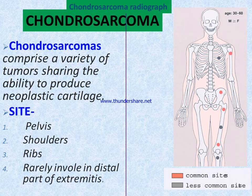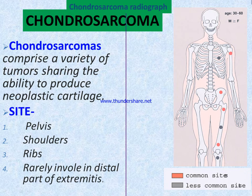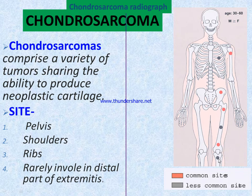Chondroma comprises a variety of tumors sharing the ability to produce neoplastic cartilage. The site of osteochondroma is the pelvis, shoulder, and ribs; the distal part of extremities is rarely involved. Here is an image showing sites of chondroma — red and green indicate common sites, and gray indicates less common sites.